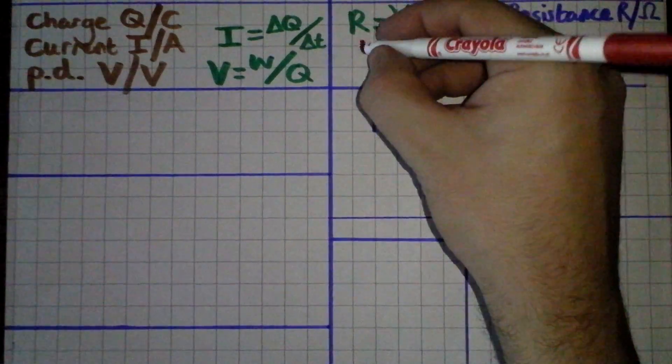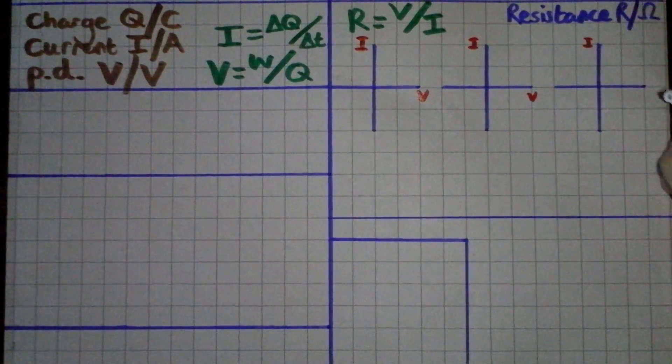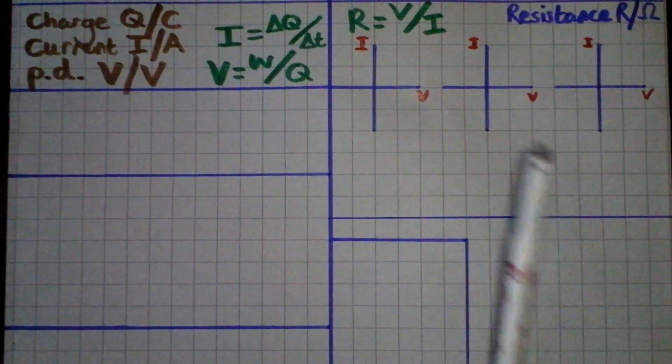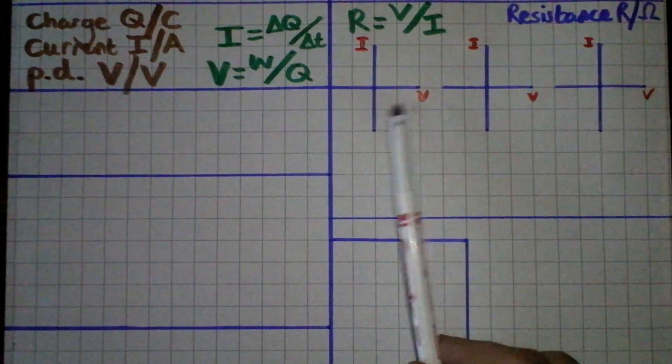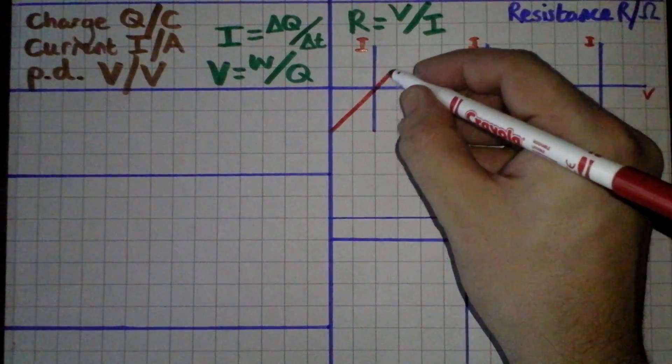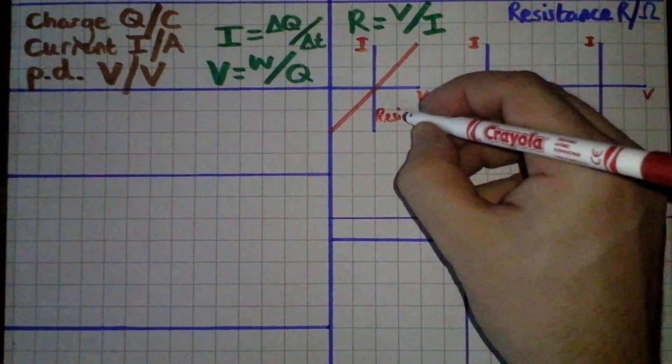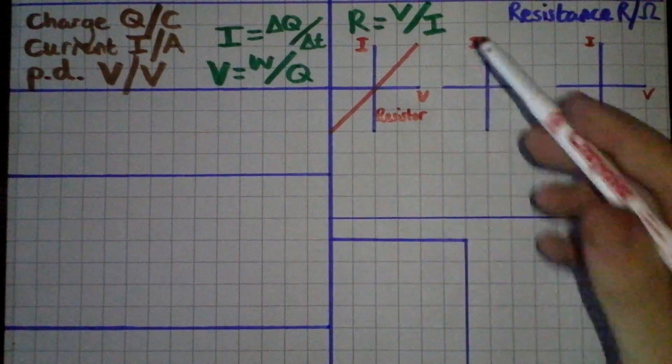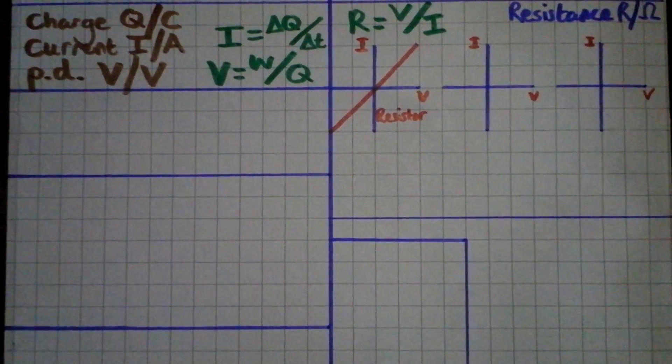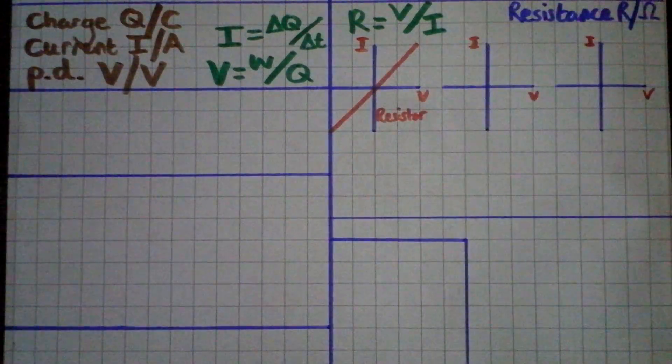From this we can draw certain graphs. We draw IV graphs, current voltage or potential difference graphs. These IV graphs are really important because they tell us a lot about a component. You'll notice straight away that the gradient I over V is the inverse of the resistance. If you have something ohmic, that is something that obeys Ohm's law, such as a resistor, you will end up with direct proportion, a perfect straight line through the origin. You can work out the gradient and one over the gradient would give you the resistance. So a steep gradient would be a low resistance and a shallow gradient would be a high resistance.